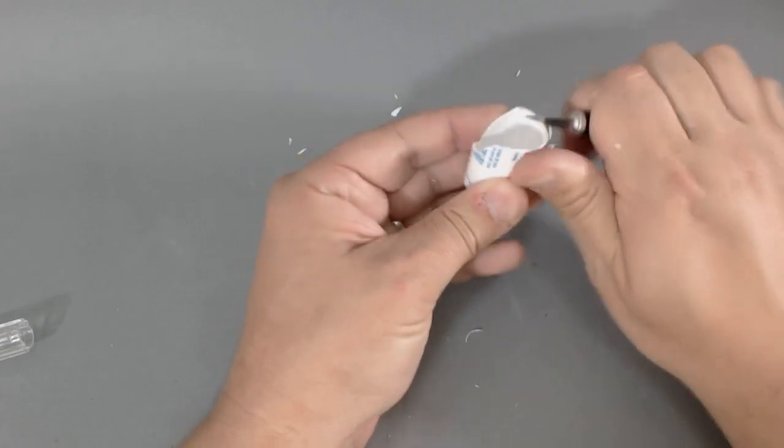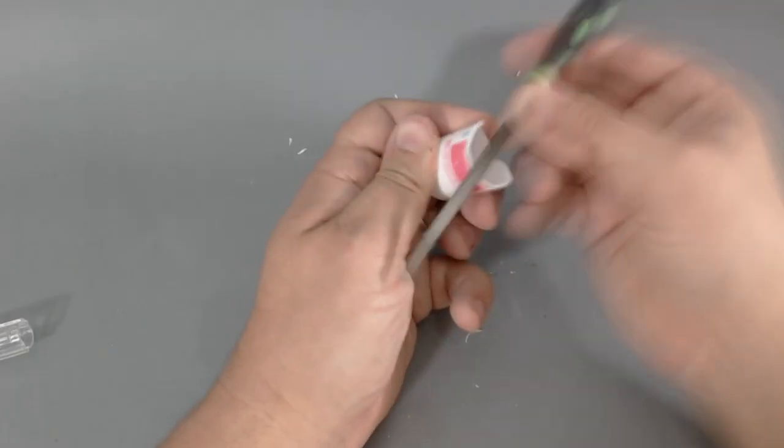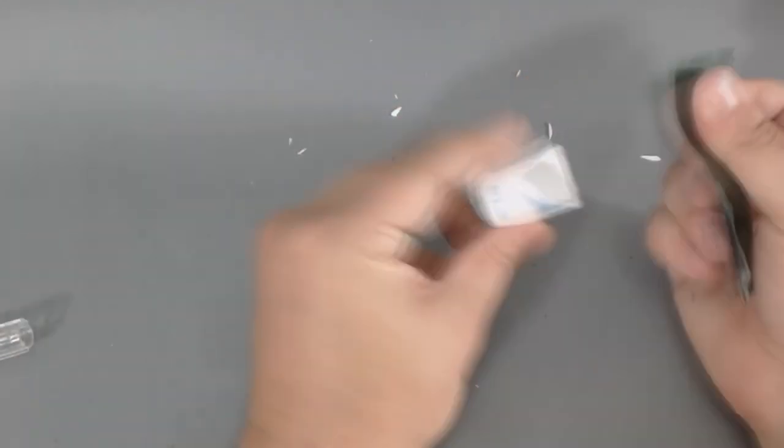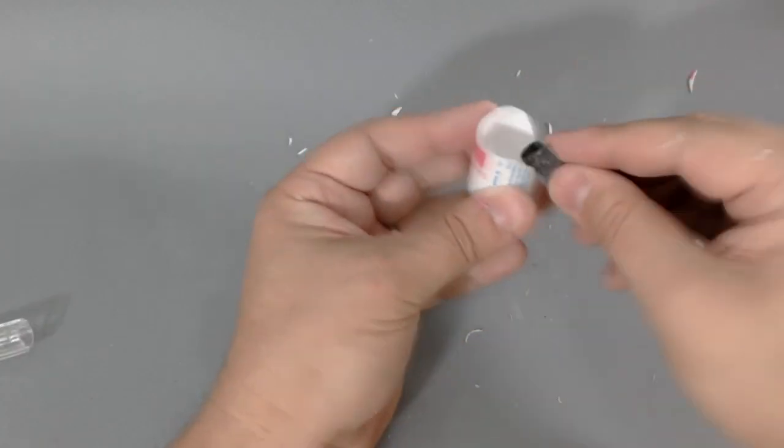I cut a bit there too much—I wasn't happy with the shape there. So just use the clippers to straighten it out a bit and then file it down. Now I'm just going to sand off any loose bits, any sharp bits so I don't injure myself when I'm working with it.